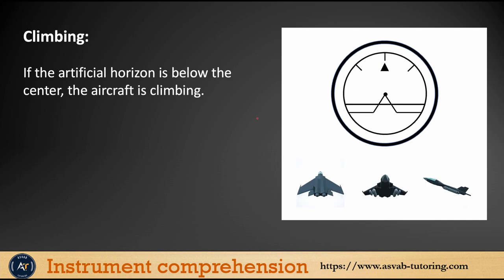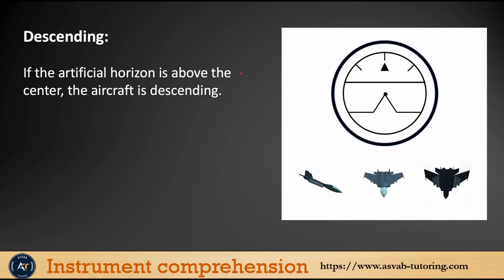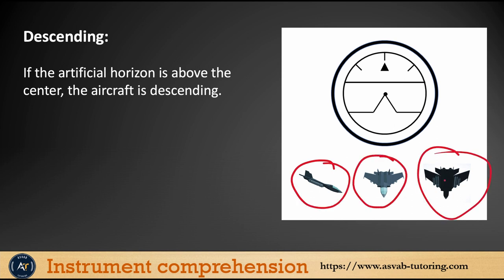Climbing means the aircraft is going upward. You can see the artificial horizon with the index showing the aircraft climbing. Descending means the artificial horizon is above the miniature aircraft — that means the aircraft is going down. It could be in different orientations.